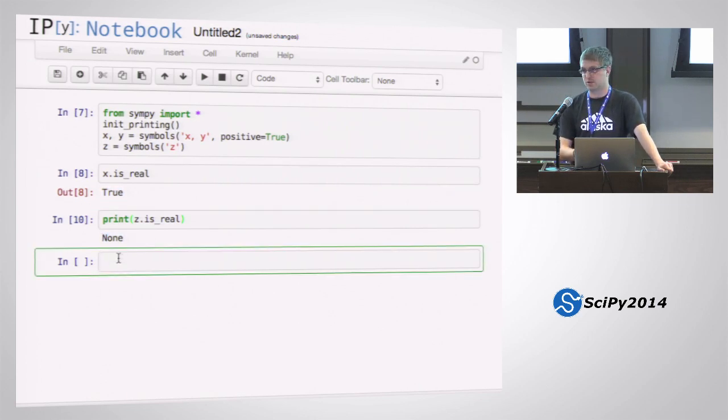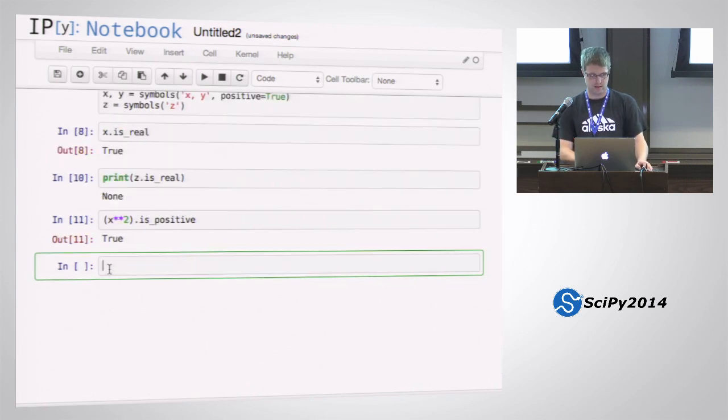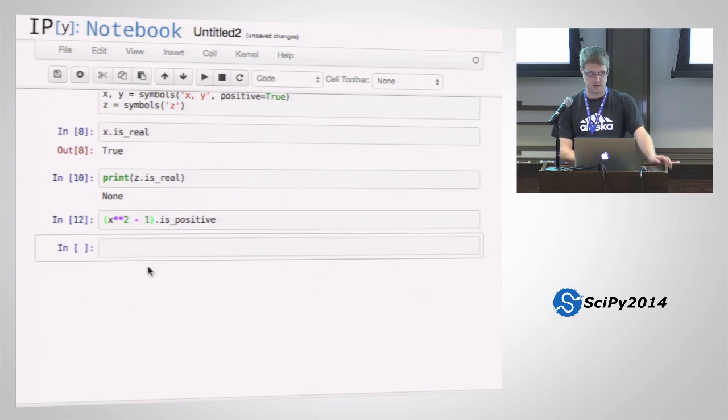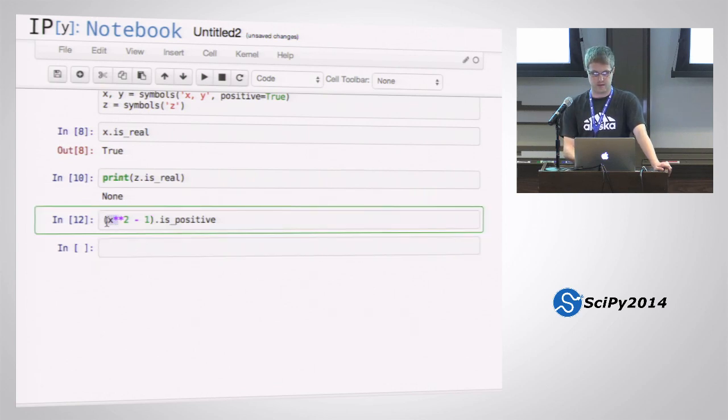So none either means it could be true, it could be false, or it just means that it couldn't deduce either way. So for example, we know x is positive. So I want to know, is x squared positive? And the answer is yes. I want to know if x squared minus 1 is positive. The answer is none, because it could be positive or it could not be positive depending on the value of x.